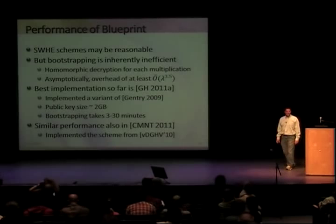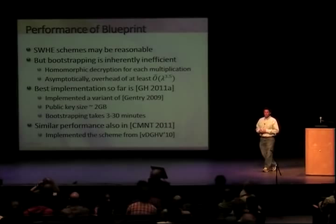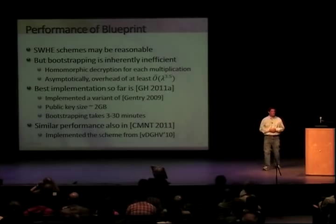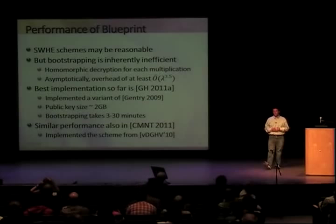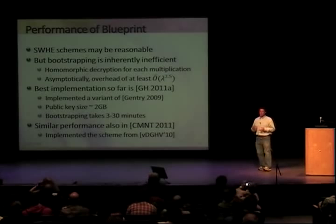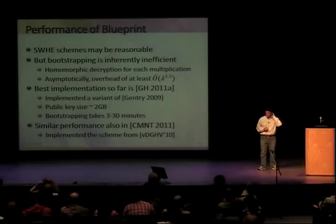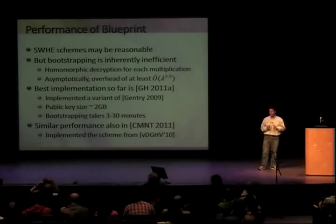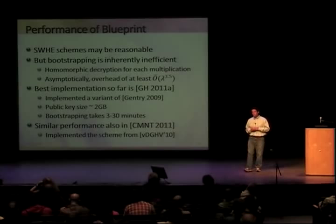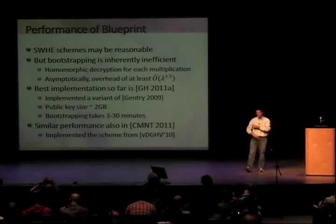Let's talk about performance. The underlying somewhat homomorphic encryption may be reasonable in terms of performance. Depending on what you want to do, for several applications it takes something like one second to ten seconds to do a single multiplication. That could be a reasonable price to pay. So if all you want is to evaluate low-degree polynomials, you can use somewhat homomorphic encryption as-is and may get reasonable performance.